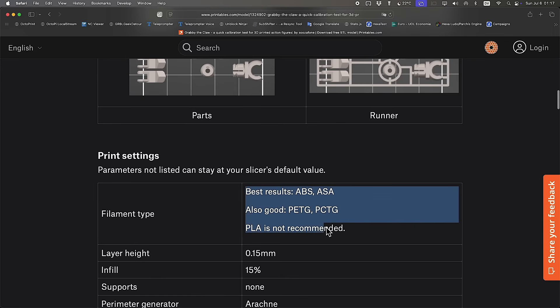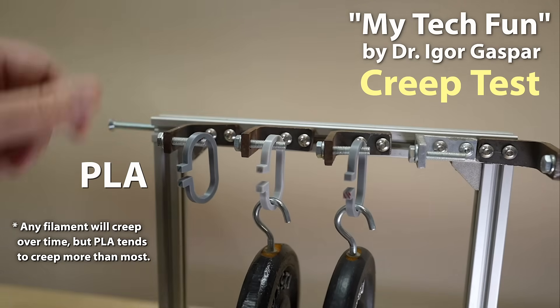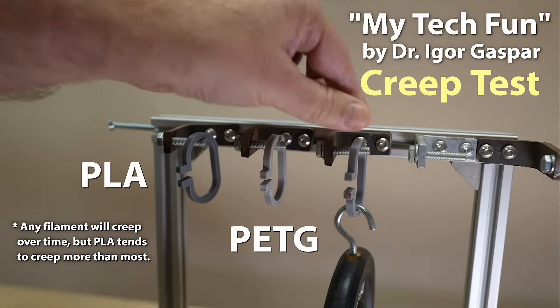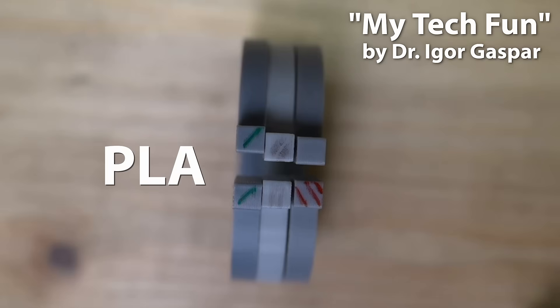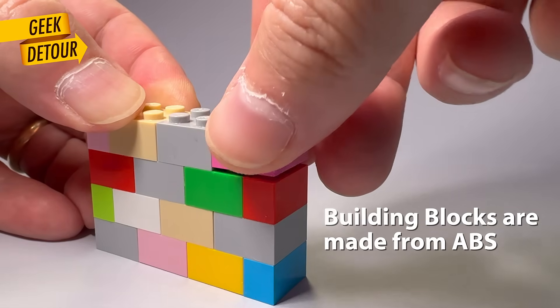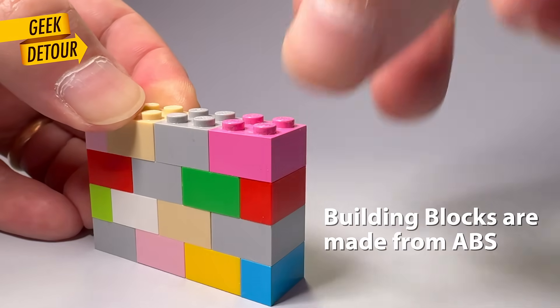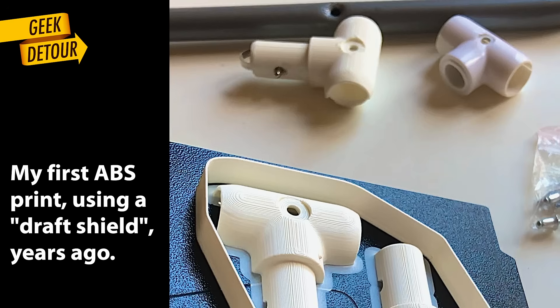Now, why ABS is better for joints? PLA has a problem called creep. Over time, it adapts to the forced position and it doesn't spring back. That makes the grip loose. ABS holds its shape better, so the snap stays tight. That's one of the reasons building blocks still hold together years later.